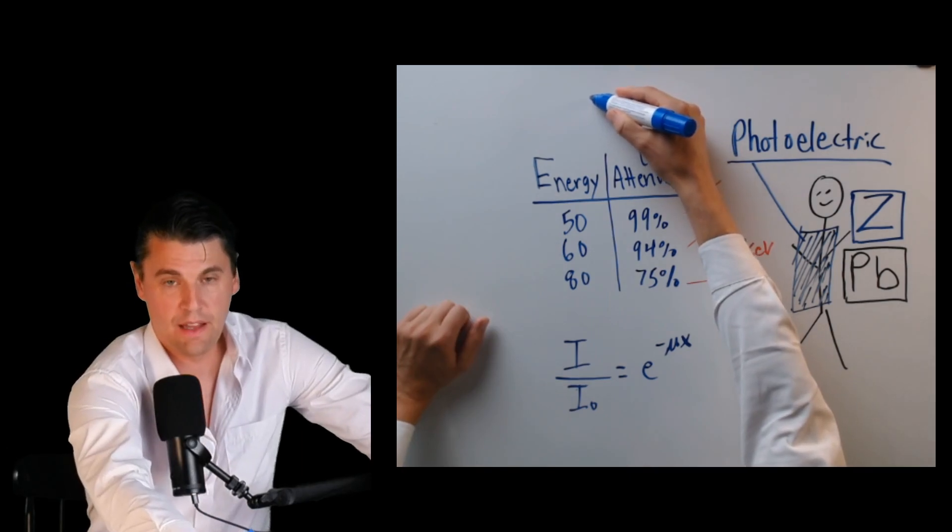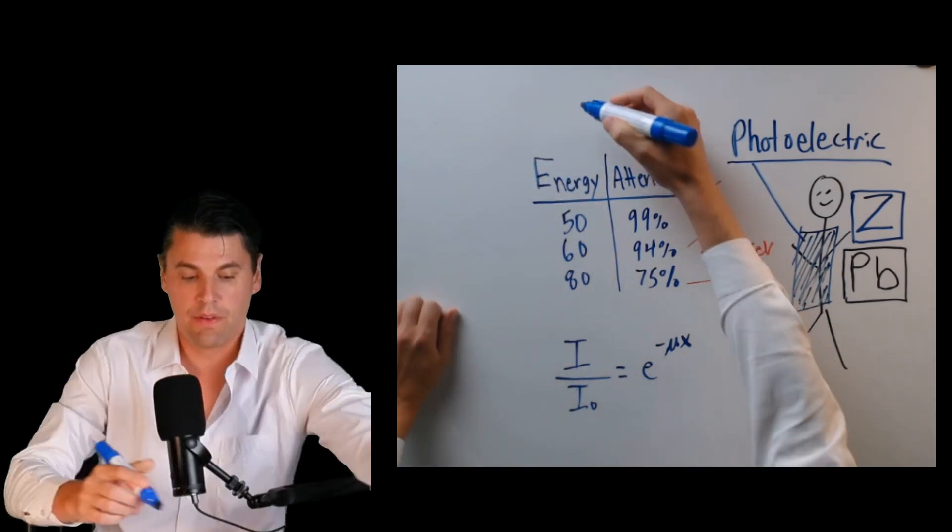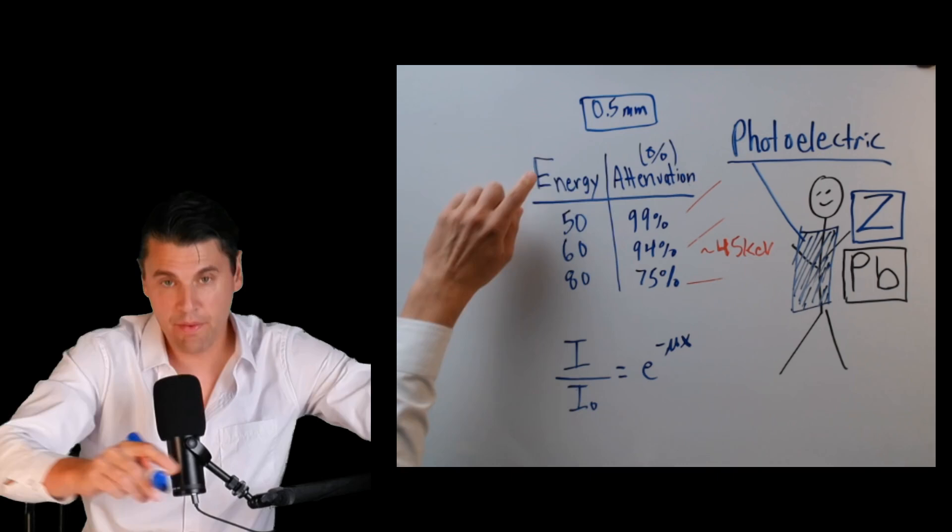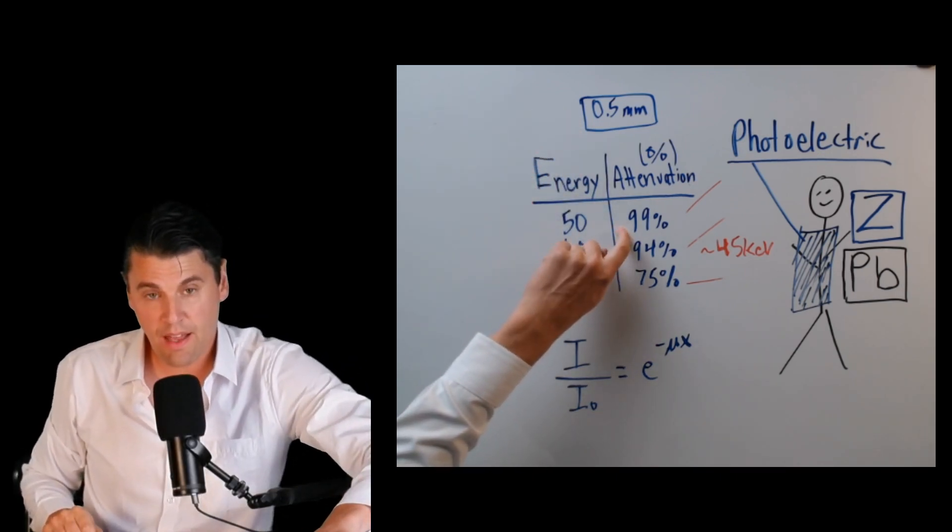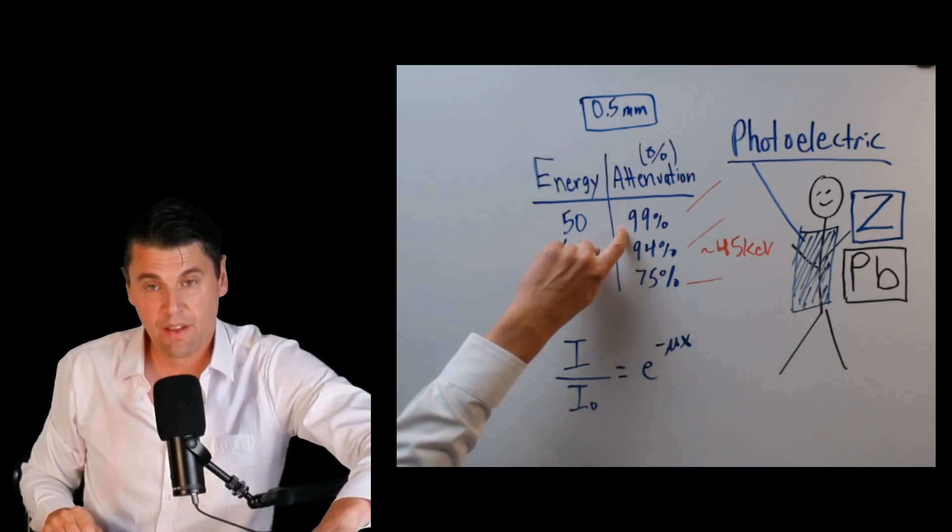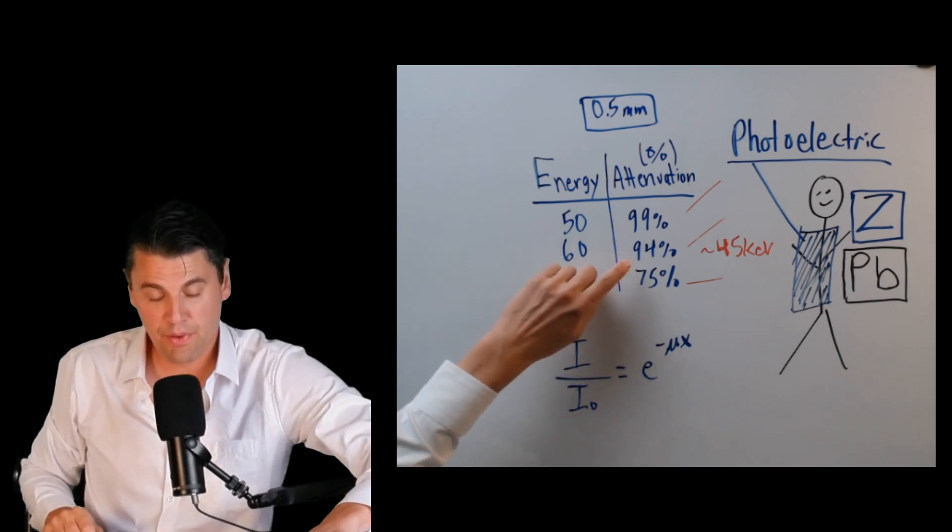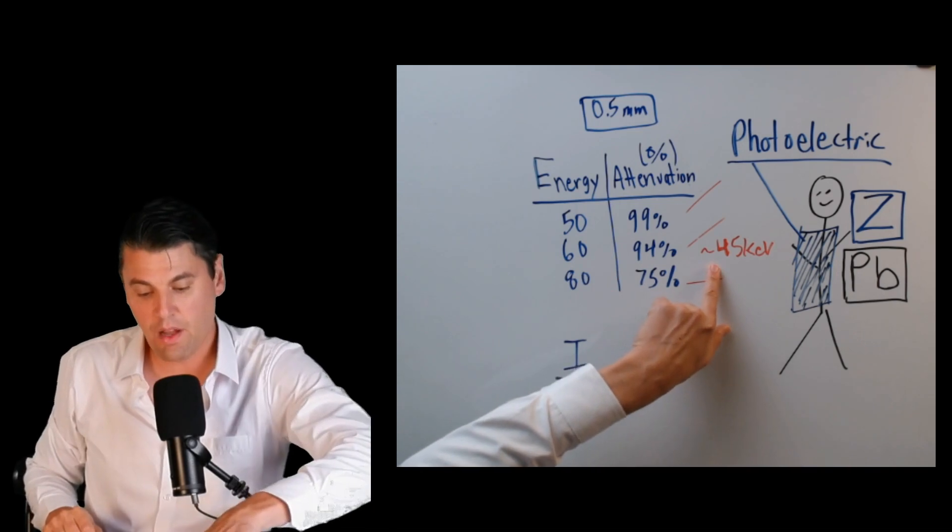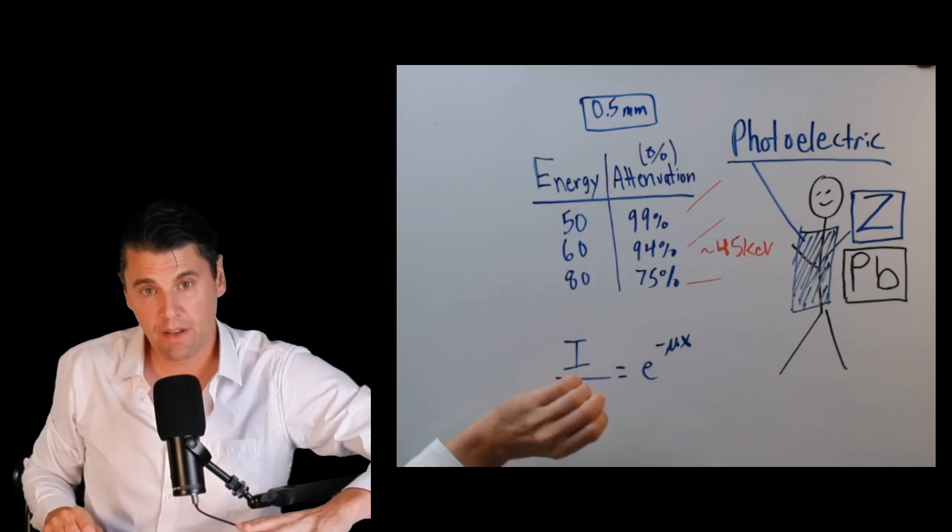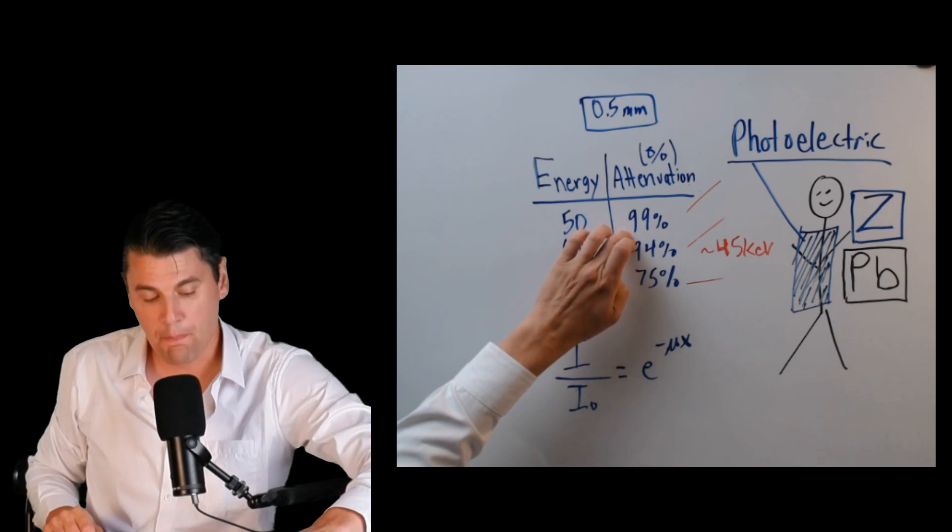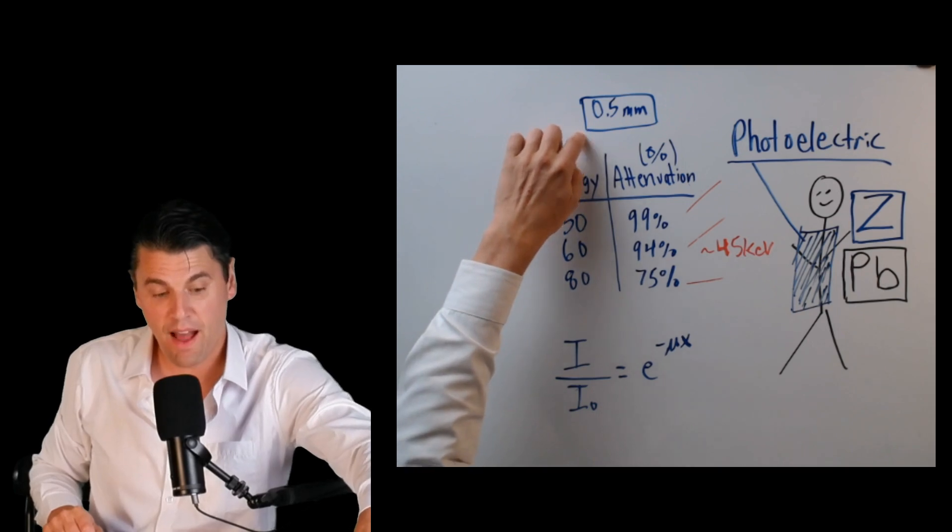This table here is actually for 0.5 millimeters of lead. If you have 0.5 millimeters of lead and the energy of 50 KEV, you're going to stop 99% of the x-rays. The energy is 60 KEV, 94%, and so on. And like we talked about, those scattered x-rays have a lower energy than the primary x-rays that were coming in. We're going to be stopping actually more than 99% of the x-rays if we have 0.5 millimeters of lead.